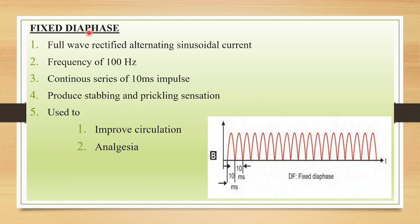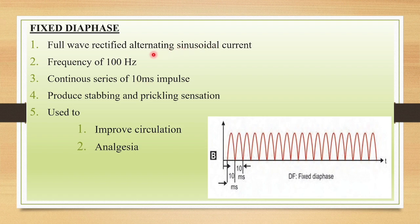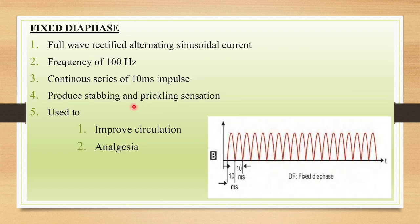The next mode is fixed diaphase, which is full wave rectified — an alternating sinusoidal type of current. The frequency will be 100 Hz and it produces a continuous series of 10 millisecond impulses. This mode may produce stabbing and prickling sensations. Fixed monophase produces vibration sensation for a prolonged period of time, while fixed diaphase produces stabbing and prickling sensations and can be used to improve circulation and reduce pain.